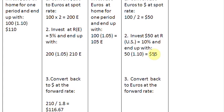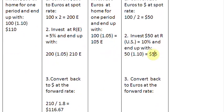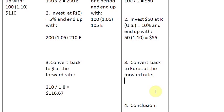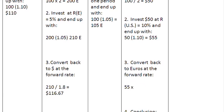Now what to do with these 55 dollars? Because we have assumed the Eurozone to be our home in this section of the analysis. Once we have made 55 dollars, we now want to take them back to the Eurozone, and that conversion will be done at the forward rate of 1.8 euros to a dollar. We want to convert dollars to euros, so we multiply: 55 times 1.8 gives us 99 euros.